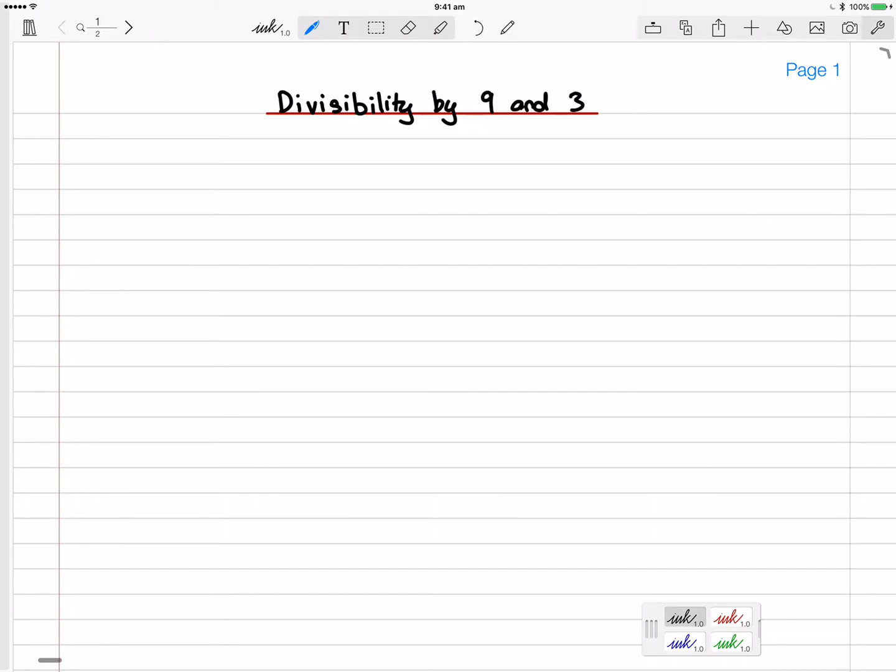In this video we will look at a test to determine whether an integer is divisible by 9 or if it's divisible by 3. And the only thing that you'll need to know in order to understand this test or where this test comes from, so the proof of this test, is modular arithmetic. So if you've never seen modular arithmetic before you could probably just look it up on Google before continuing with this video, it's not too hard to understand.